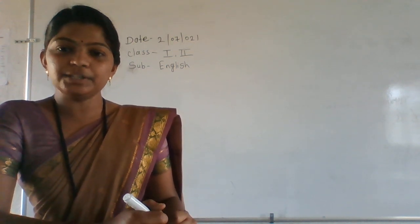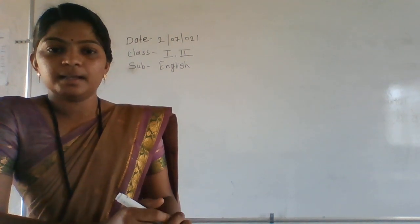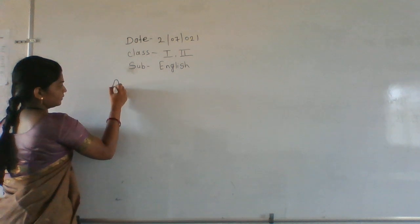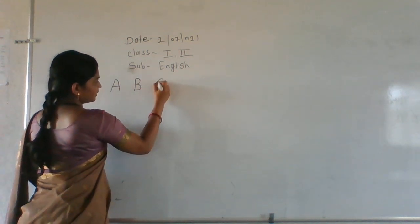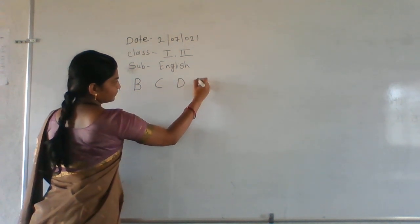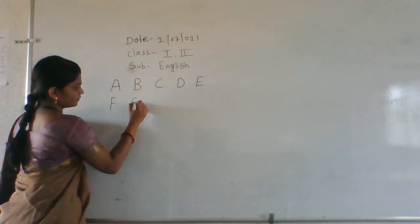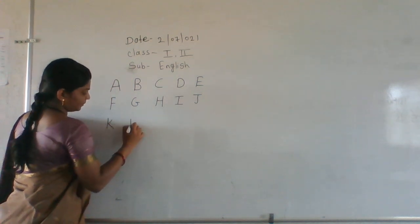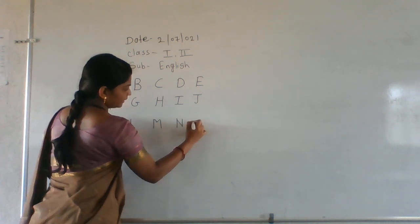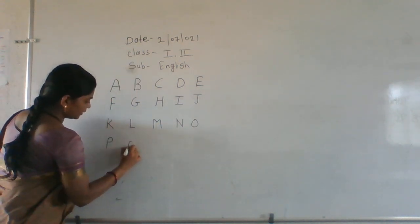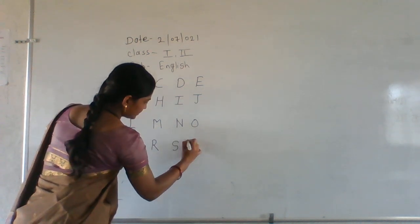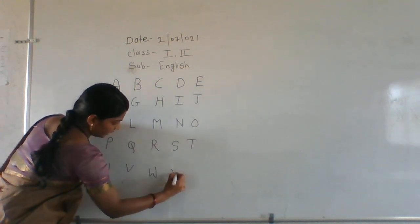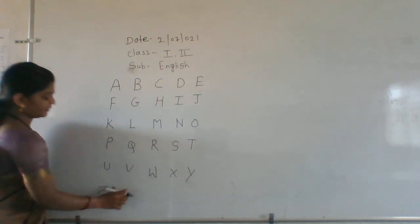We are going to learn about English basic knowledge — English alphabets. A, B, C, D, E, F, G, H, I, J, K, L, M, N, O, P, Q, R, S, T, U, V, W, X, Y, Z. Okay children.